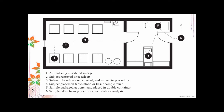For an animal testing example: this is an animal cage where the animal is the subject. You sedate the animal in the cage, and once asleep, place it on a cart and move it for dissection. You can see a clear, smooth flow of movement of personnel and material. The subject is placed on a table, blood or tissue samples are taken and packaged, the samples are sent from the procedure area to the laboratory, and the animal can be returned to its cage. This is for an animal testing facility where samples are obtained from animals.